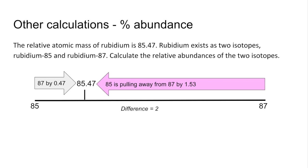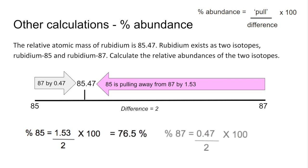And the formula I use for this is the percentage abundance is the pull of the isotope divided by the difference, multiplied by 100. So the percentage for the 85 isotope is its pull, 1.53, divided by the difference of 2, multiplied by 100, 76.5%. And the other one's obviously 23.5%, but there's the calculation for it.